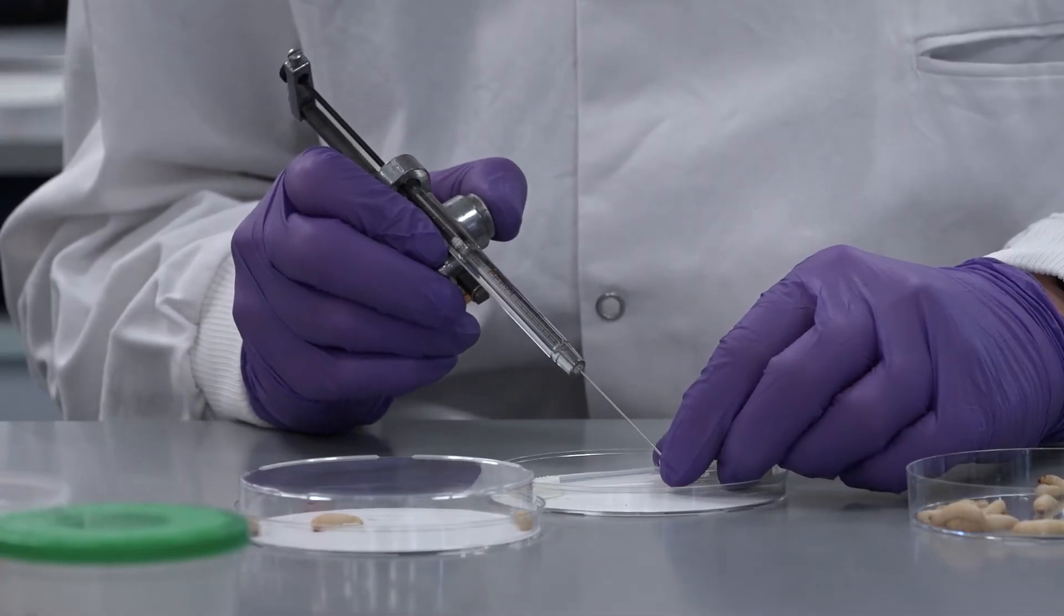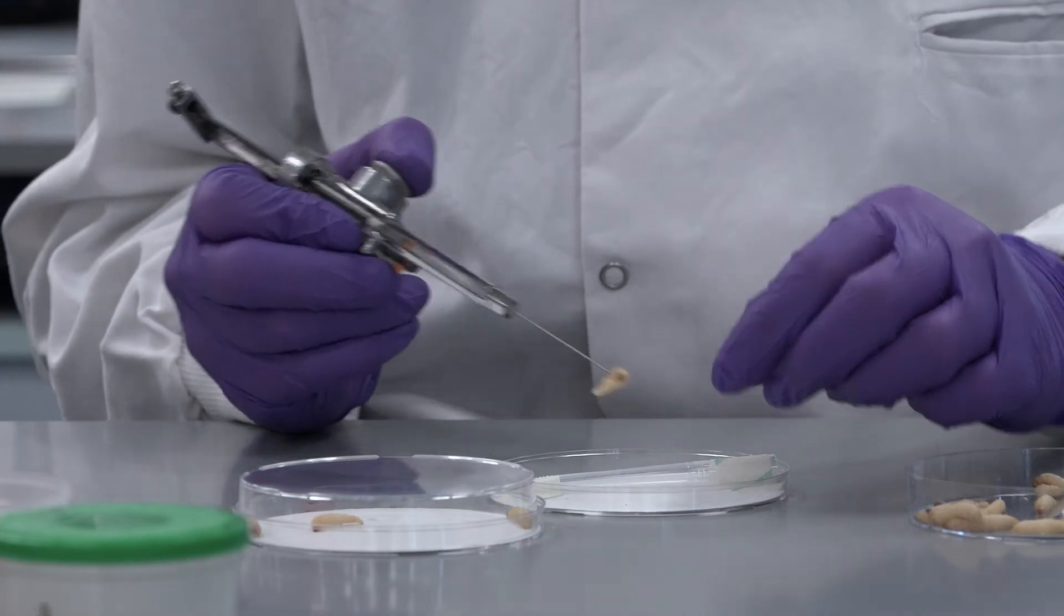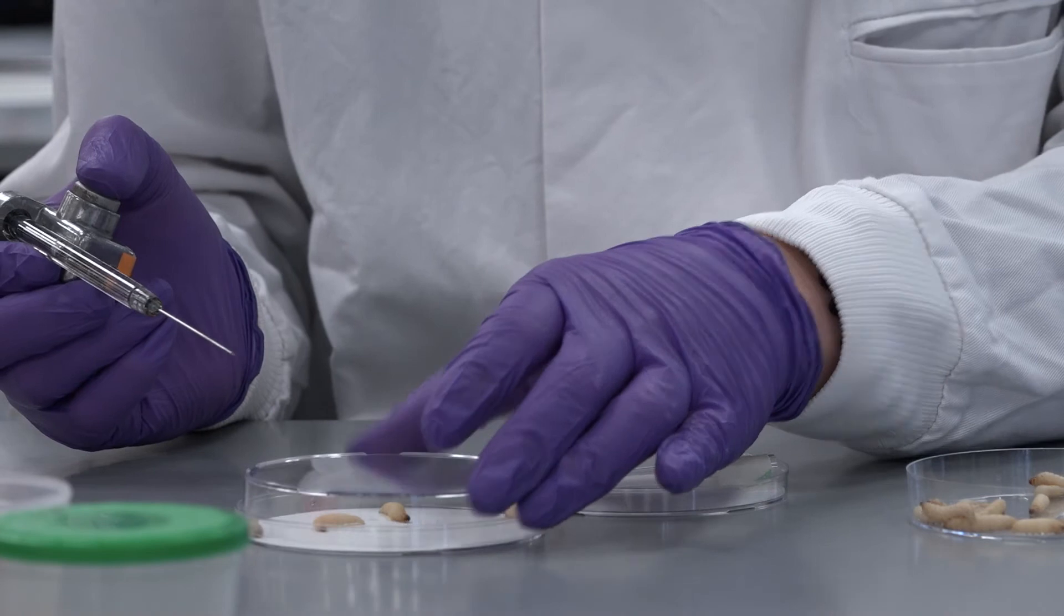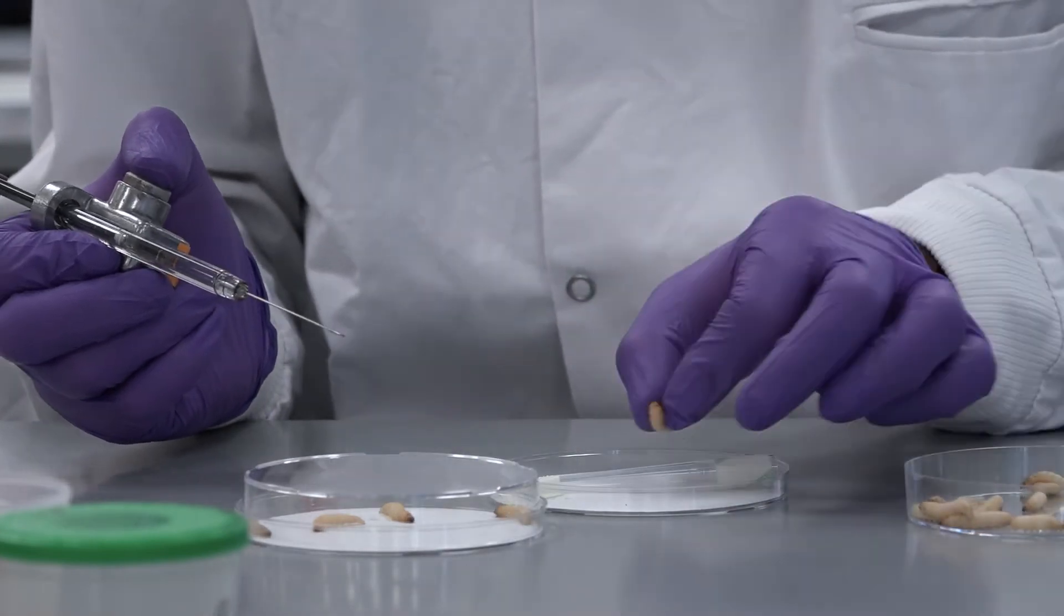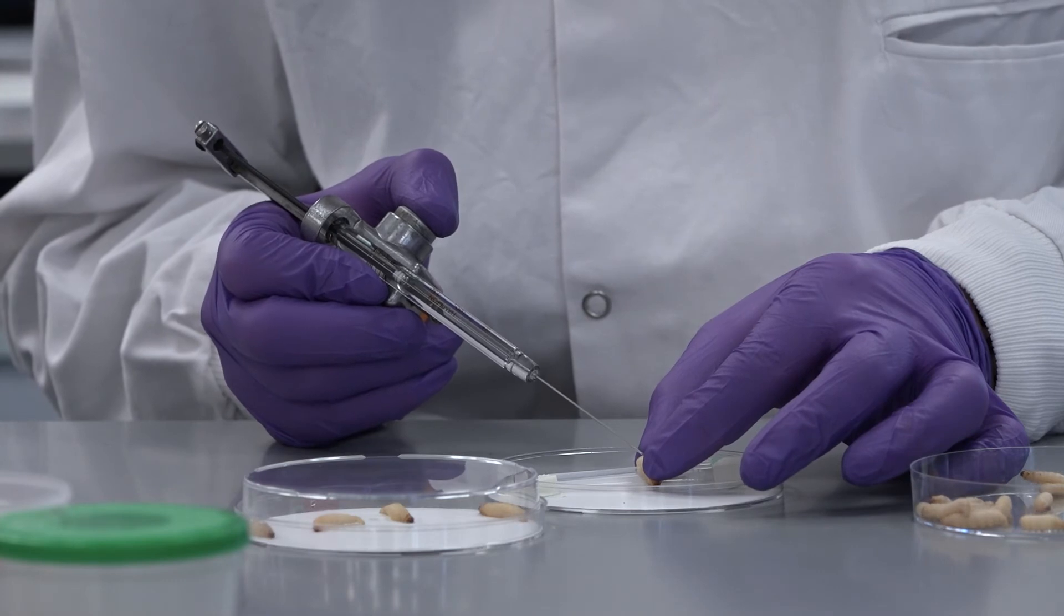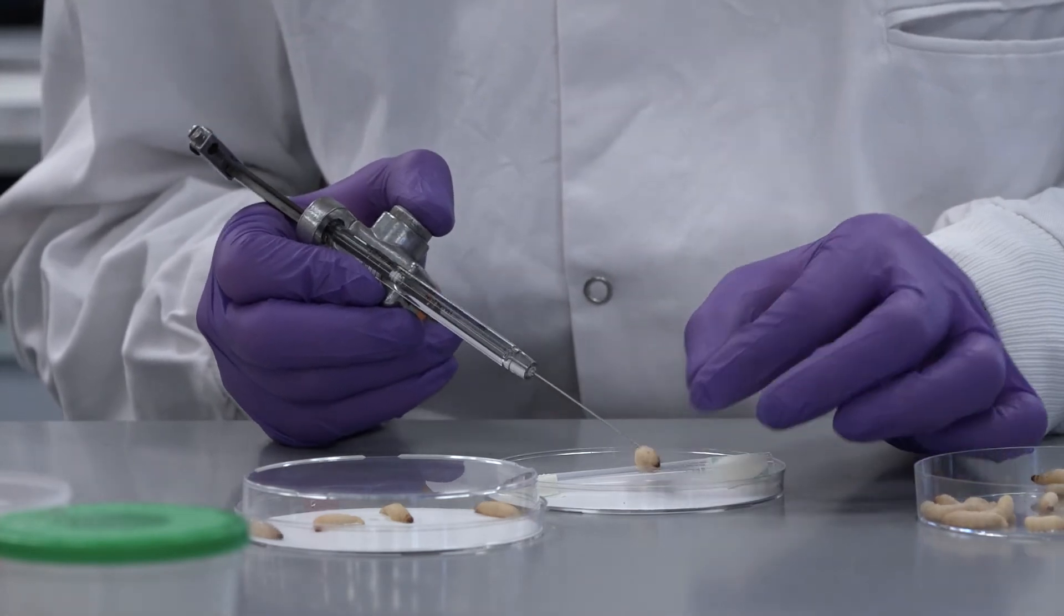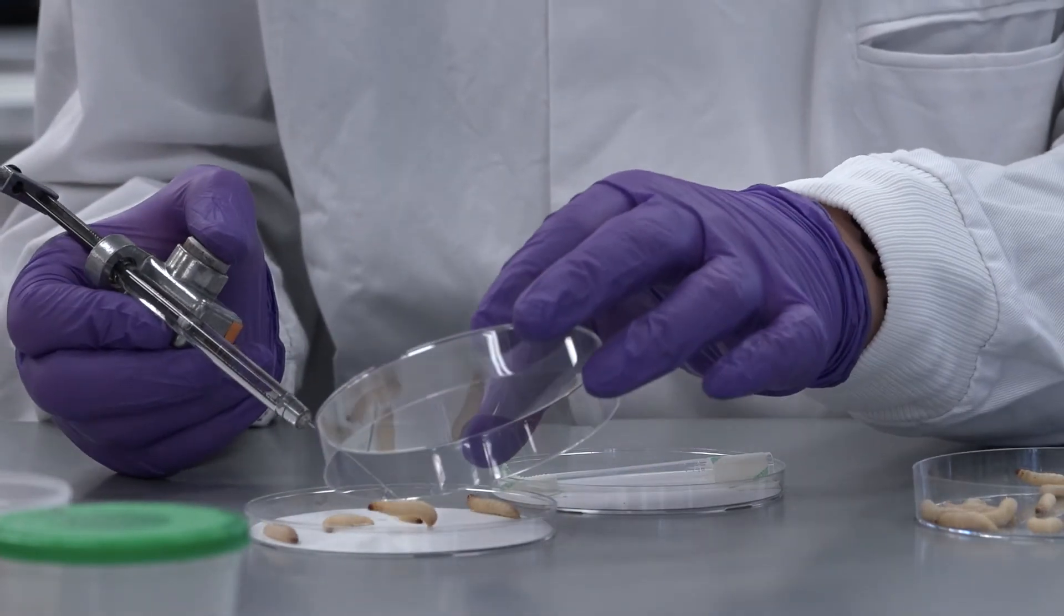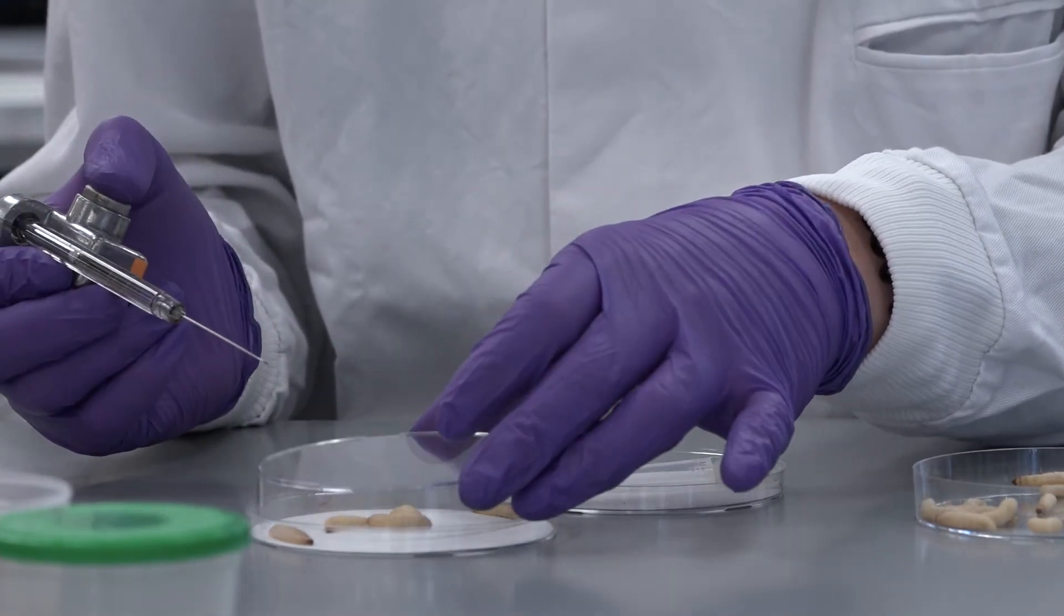Injection controls involve injecting each larvae with 10 microlitres of PBS in the front right proleg. PBS should have no negative effect on the larvae. Therefore, if larvae die or are unhealthy after injection with PBS we can conclude that this was due to poor injection technique rather than a biological effect.